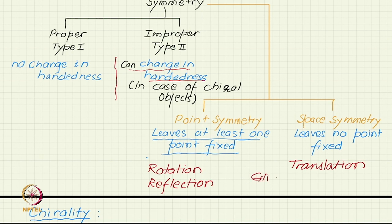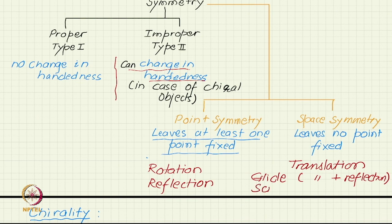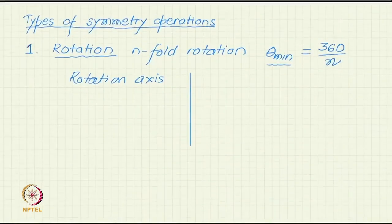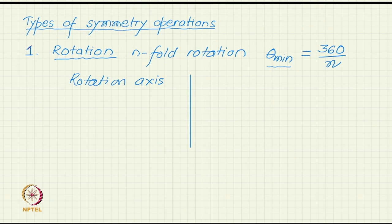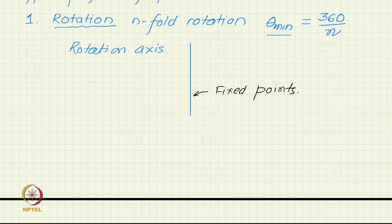Similarly, glide — which is translation plus reflection — or screw, which is translation plus rotation, since they have a translation component, these also will not leave any point unchanged or invariant. So all these are space symmetry operations. Rotation, since it is a point operation, leaves points fixed, and those fixed points constitute the rotation axis.